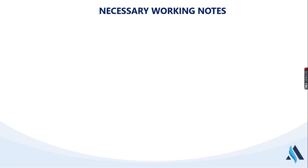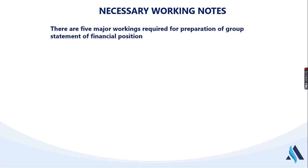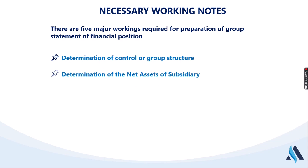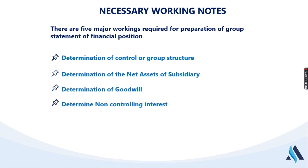The next thing we look at are the key necessary workings required when consolidating, either for examination purposes or in real life. There are basically five workings for preparing a consolidated statement of financial position: first, establish control or the group structure; second, determine the net assets of the subsidiary; third, determine goodwill; fourth, determine non-controlling interest; and fifth, compute the group retained earnings, also called the parent retained earnings.